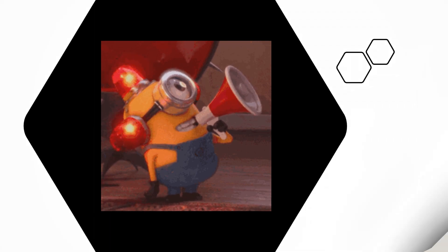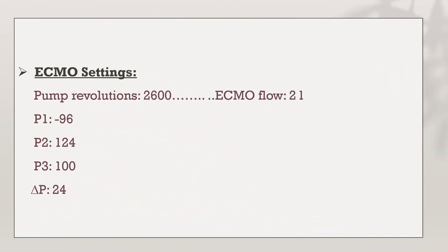Checking the ECMO console, we find the same RPM but flow has dropped to 2 liters per minute, and P1 has increased to minus 96. There is a drop in P2 and P3 pressures as well. We must proceed to the next step of circuit checking.